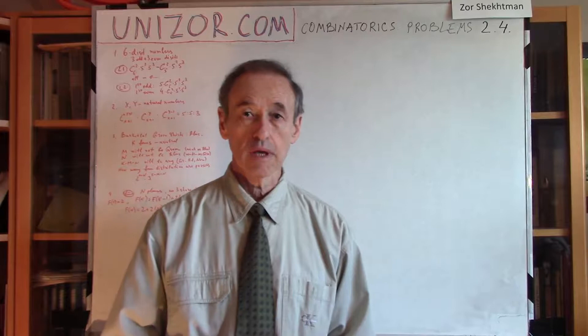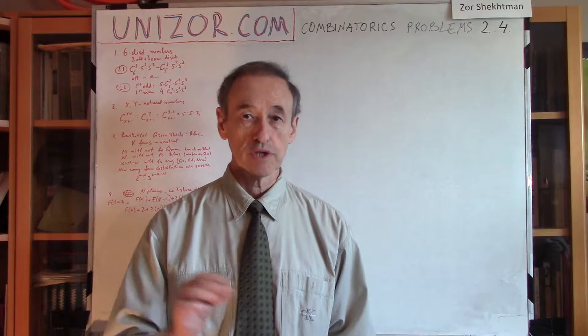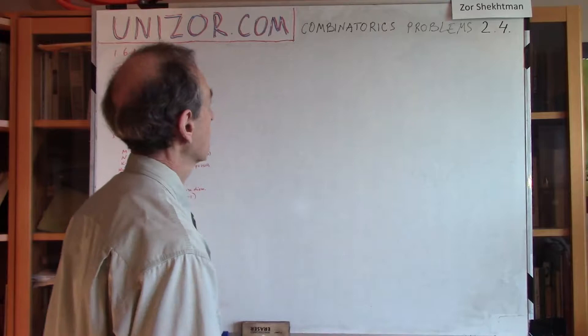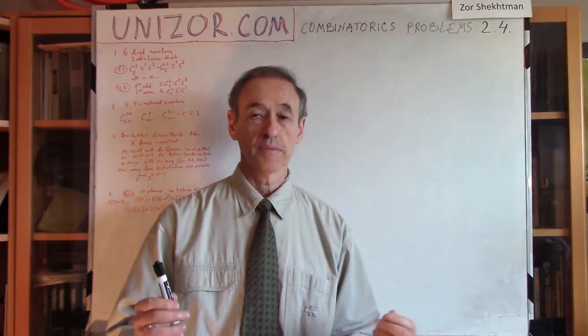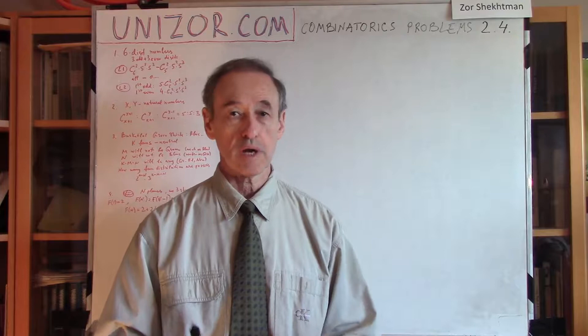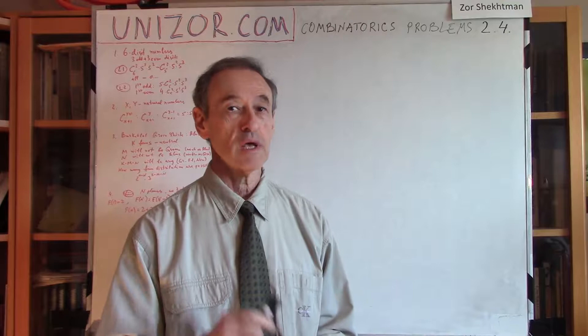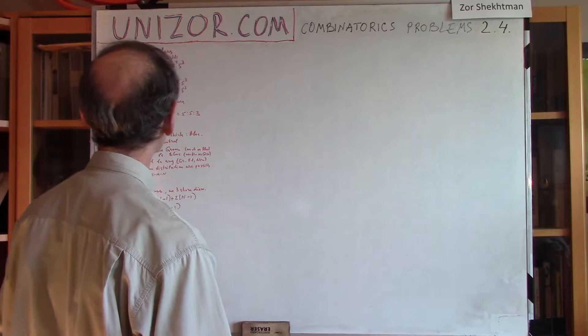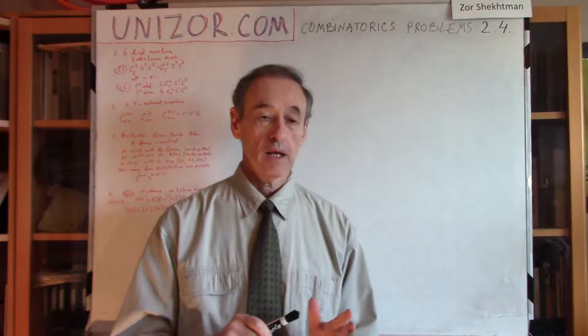The first question is: how many different six-digit numbers exist if three digits are odd and three digits are even? I suggest we approach it in two different ways. If you can solve a problem from two different directions and get the same answer, that's a good check — combinatorial problems are very difficult to verify otherwise. I'll present it in two different versions.